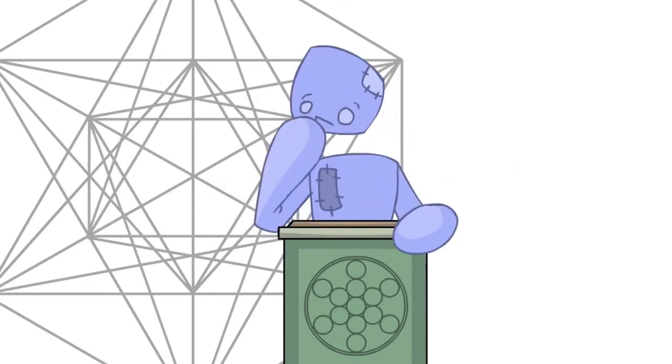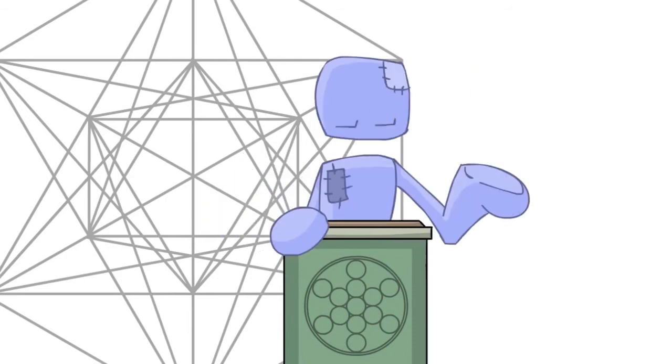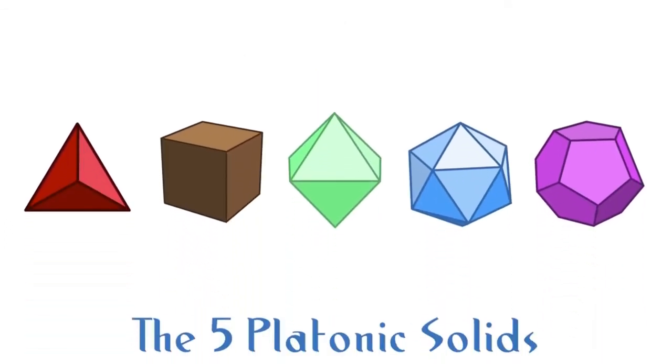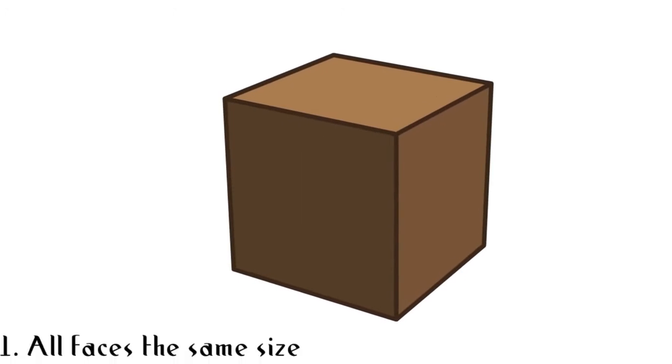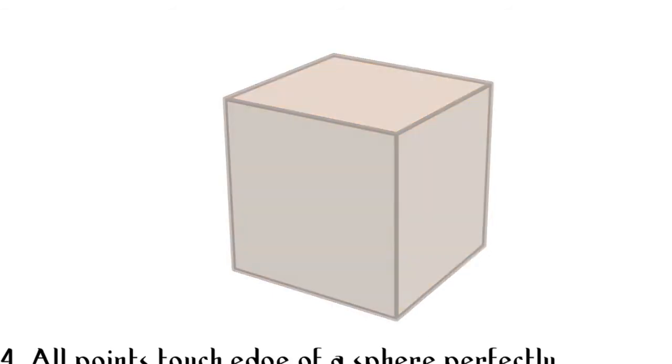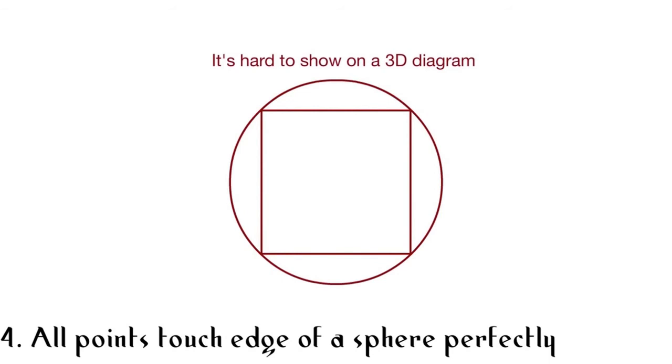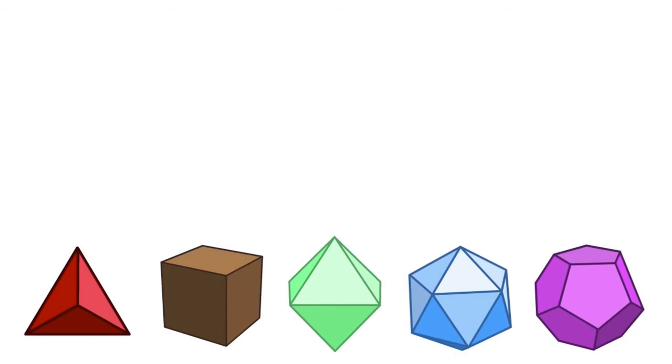Anyone who has studied geometry knows that there are five unique shapes in the universe, and that they are crucial to understanding both regular and sacred geometry. They are called the platonic solids. A platonic solid has certain characteristics by definition. First, all of its faces are the same size. Secondly, the edges are all the same length. Third, it only has one size of interior angles between the faces. And fourth, when put inside of a sphere, all of the points will touch the edge of the sphere perfectly.